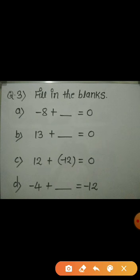Now look at the second fill-up. What should we add to plus 13 so that the addition will be 0? Plus 13 plus minus 13 becomes 0, so we should add minus 13. We always write a negative integer in brackets, so here I have written minus 13 in brackets.